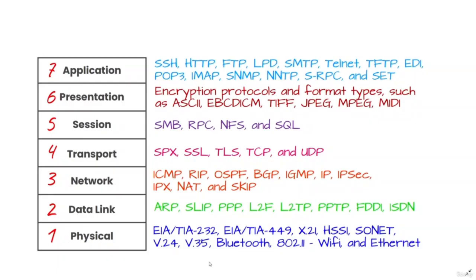The fourth layer of the OSI model is the transport layer. The transport layer manages the delivery and error checking of data packets. It regulates the size, sequencing, and ultimately the transfer of data between systems and hosts. One of the most common examples of the transport layer is TCP, or the Transmission Control Protocol.